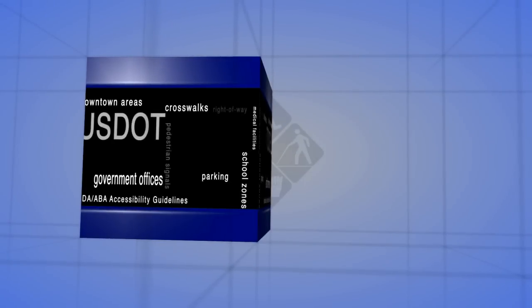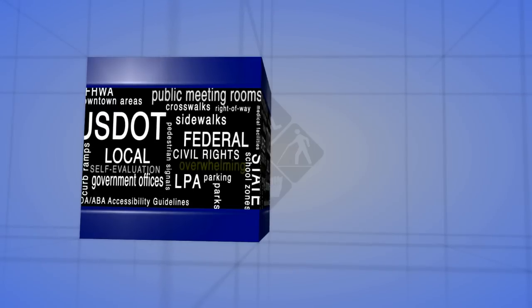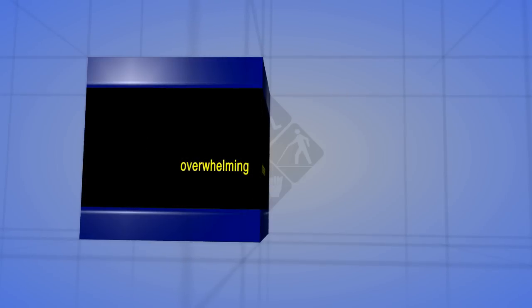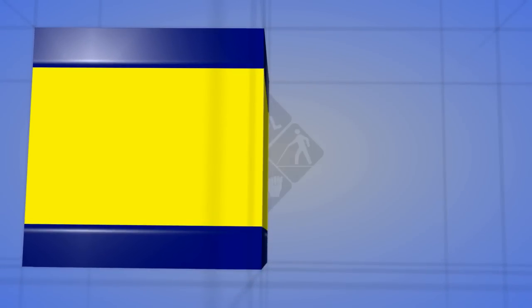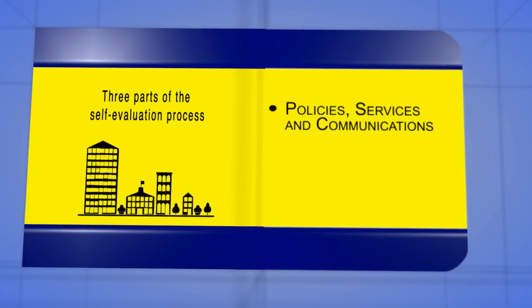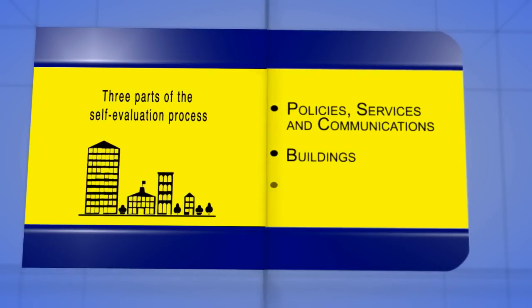Depending on the number of facilities, services and public rights-of-way for which you are responsible and the resources available to you, the self-evaluation process may seem overwhelming. To keep it manageable, it is a good idea to divide your inventory into three parts: policies, services and communications; buildings; and programs such as public rights-of-way.